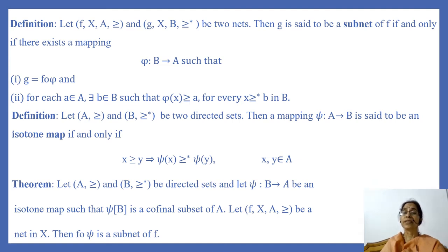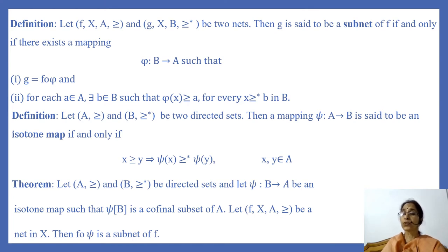Now we have a theorem which states: let (A, ≥) and (B, ≥*) be directed sets and let ψ from B to A be an isotone map such that ψ(B) is a cofinal subset of A. Let (F, X, A, ≥) be a net in X. Then we have to show that F ∘ ψ is a subnet of F.